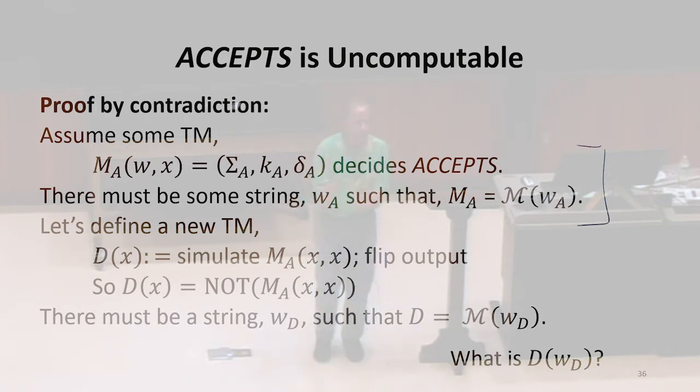But we can decide what X is. So we're going to define a new machine that takes one input and simulates our MA, our machine that we have assumed computes accepts. It's going to simulate that on this description of the machine and this input.